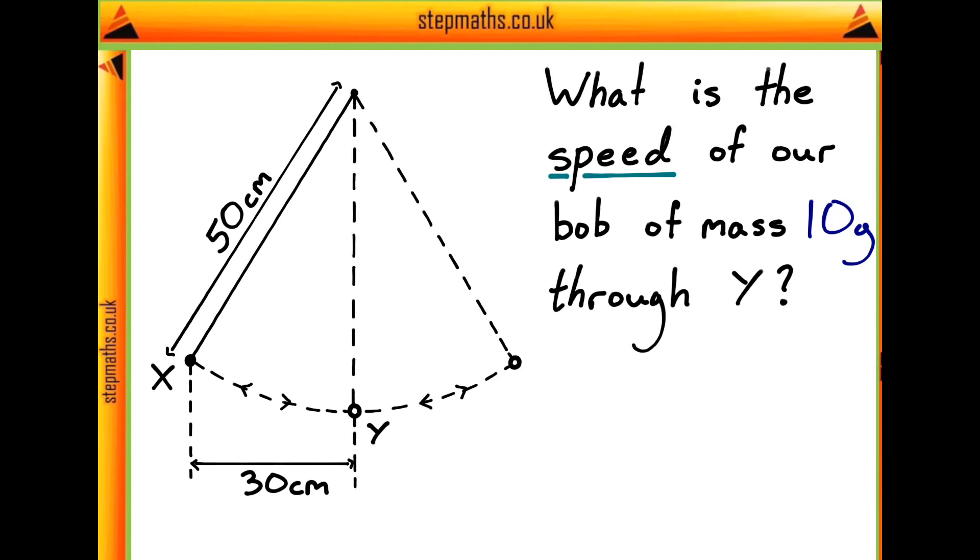Now, it's worth noting at this point that the mass of our bob given in the question is written as 10g. But since it's a mass, this g must mean grams rather than being the acceleration due to gravity, which would be a weight. This is just a small point, but it's something which people might trip up on in the written exam.